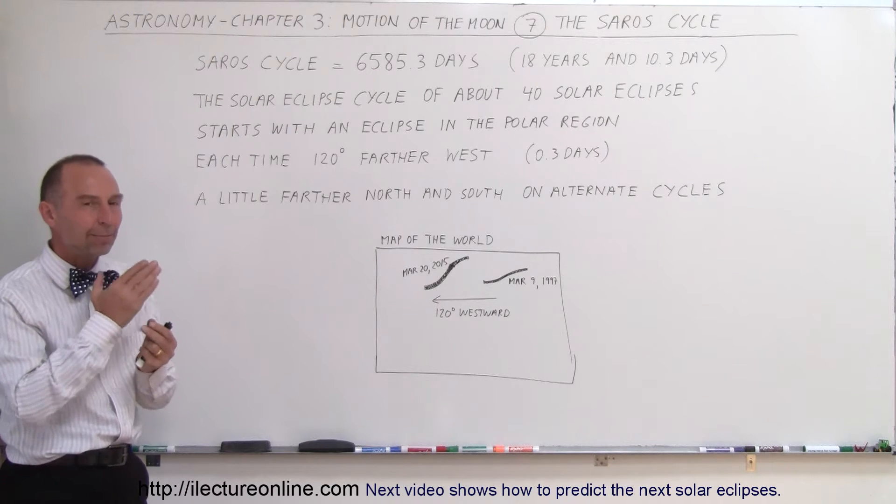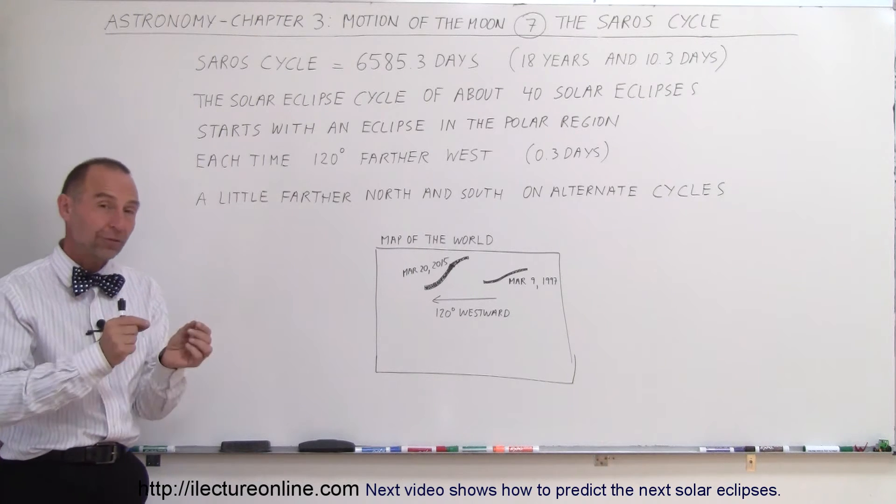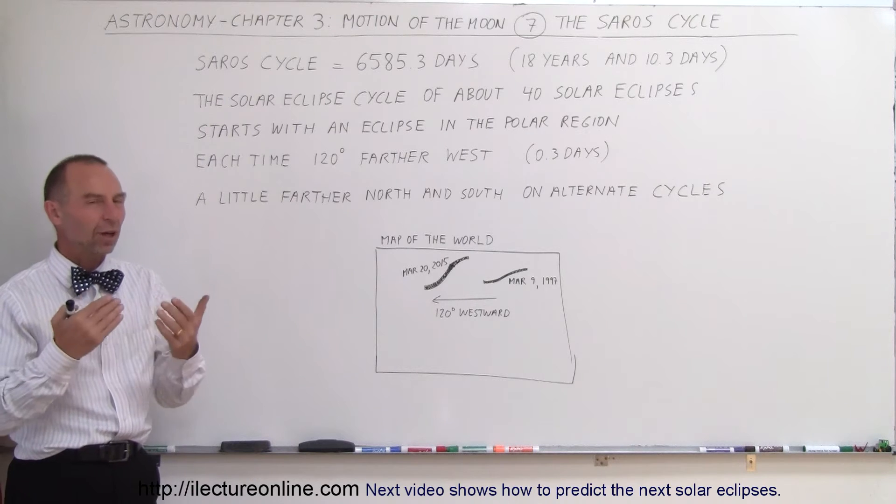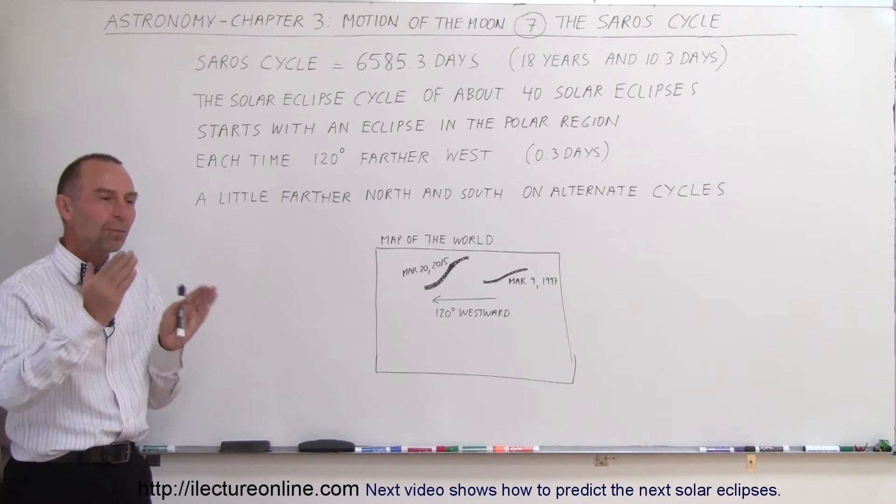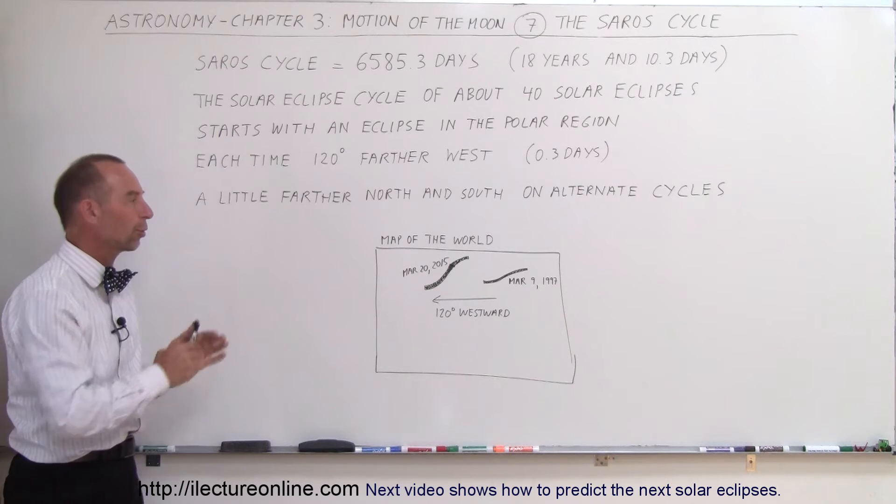Since it's 10.3 days, the 0.3 is a third of a day, which is about 120 degrees. The entire cycle repeats itself, but 120 degrees further westward.